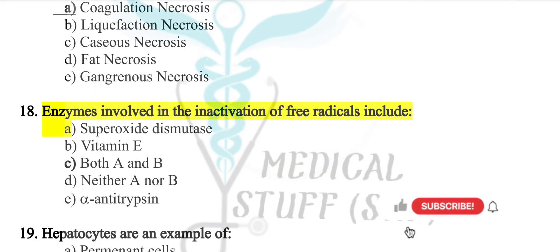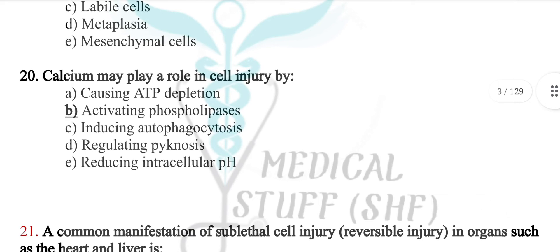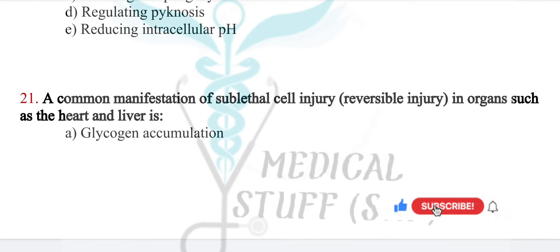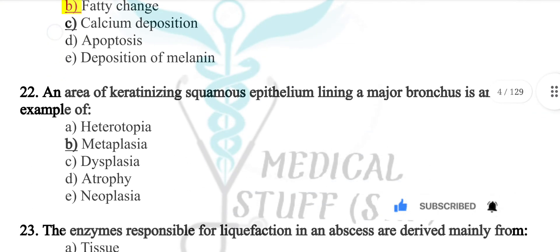Enzymes involved in the inactivation of free radicals include vitamin A, vitamin E, and superoxide dismutase. Hepatocytes are an example of stable cells. Calcium may play an important role in cell injury by activating phospholipases. A common manifestation of sub-lethal reversible injury in organs such as the heart and liver is fatty change.